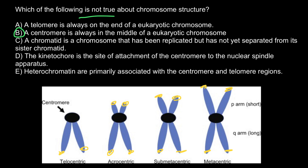But let's check the other answers as well. Answer C: a chromatid is a chromosome that has been replicated but has not yet separated from its sister chromatid. Yes, this is what we call a chromatid — when a chromosome is replicated, the two sister chromatids are connected at the centromere.